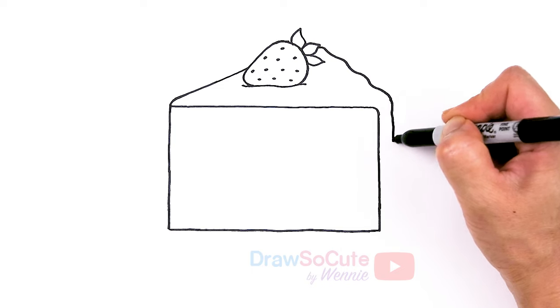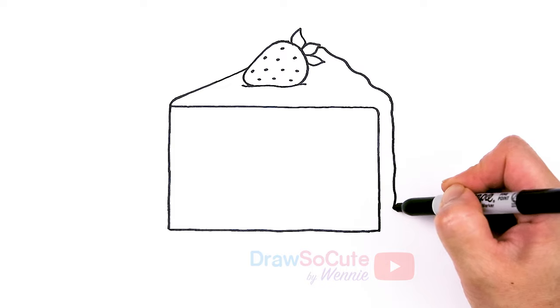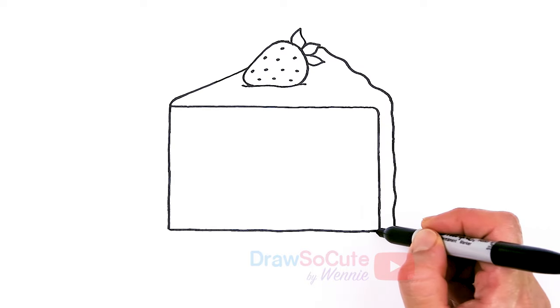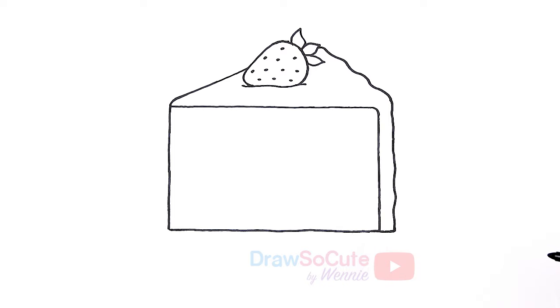And we're going to give our cake some edge. So then I'm going to wobble straight down. Just a little bit of wobble. So we know that there's some icing on this cake. And then go ahead and connect it. There. So now we have this nice big piece of cake.